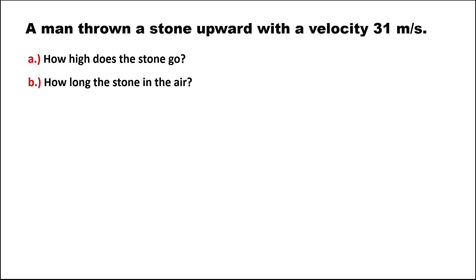For this problem, a man throws a stone upward with a velocity of 31 meters per second. Then: how high does the stone go, and how long is the stone in the air?